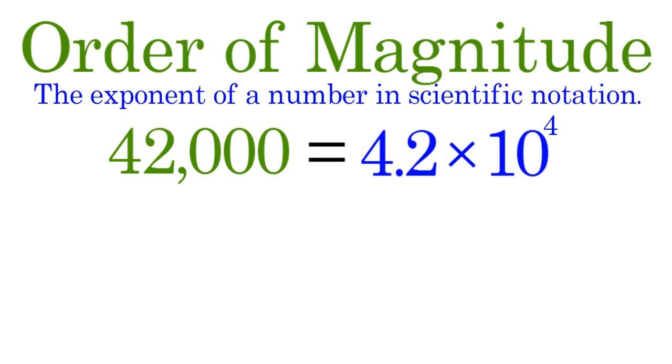For example, the number 42,000 expressed in scientific notation is 4.2 times 10 to the fourth power, so its order of magnitude is 4.